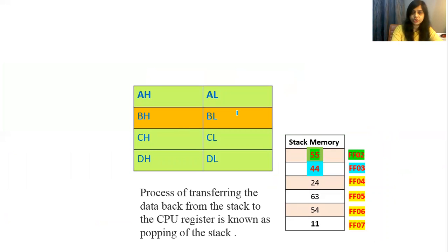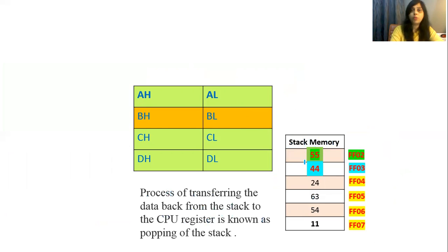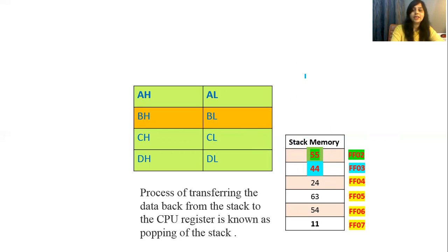Now the next operation. These are general purpose registers, the stack memory is filled till FF02. The process of transferring data back from stack to CPU register is known as popping. When we transfer contents from register to stack memory it is push, and when we transfer from stack memory to register it is pop. Remember that stack memory operates on last-in-first-out — 55 is the last data entered, so it should come out first, then 44, then 24, then 63.